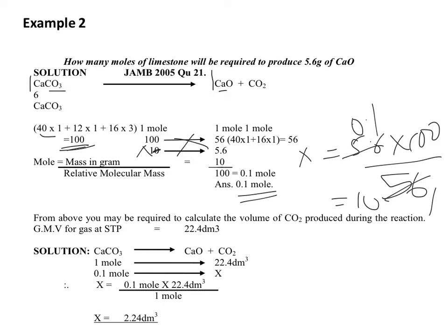From the above, you may be required to calculate the volume of carbon dioxide produced during the reaction. The volume of any gas at STP is equal to 22.4 dm³. To find the volume of CO2 produced, using the equation CaCO3 decomposes to give CaO plus CO2, that is to say 1 mole of CaCO3 produces 1 mole of CO2. One mole of any gas at STP has a volume of 22.4 dm³. So 1 mole of limestone gives 22.4 dm³ of CO2.